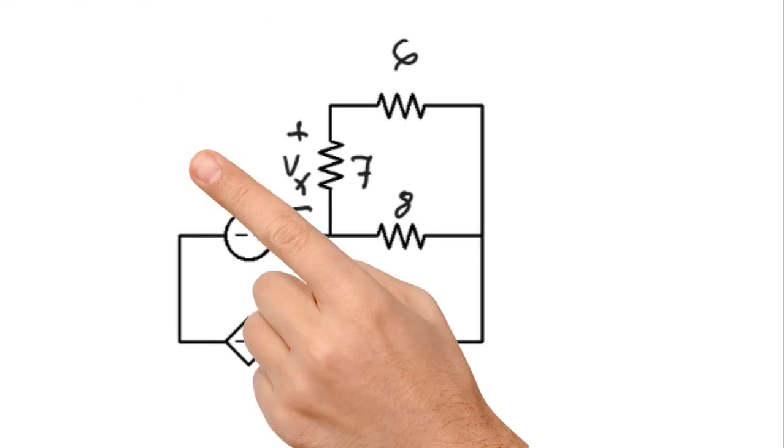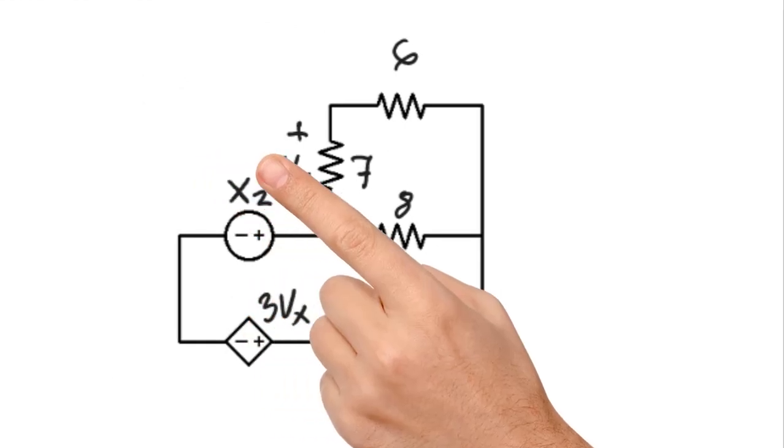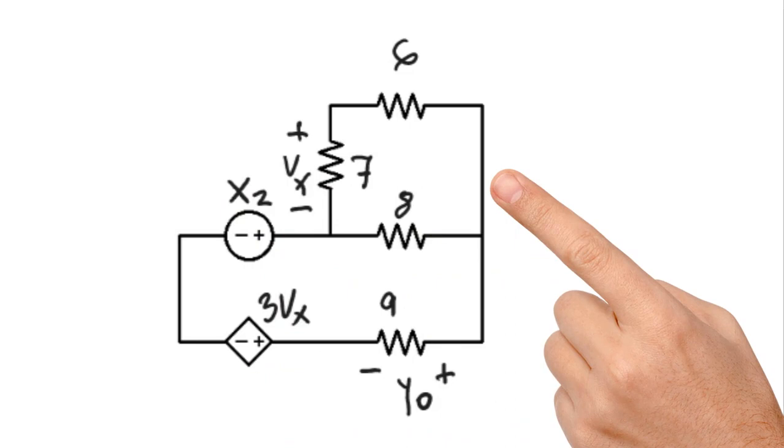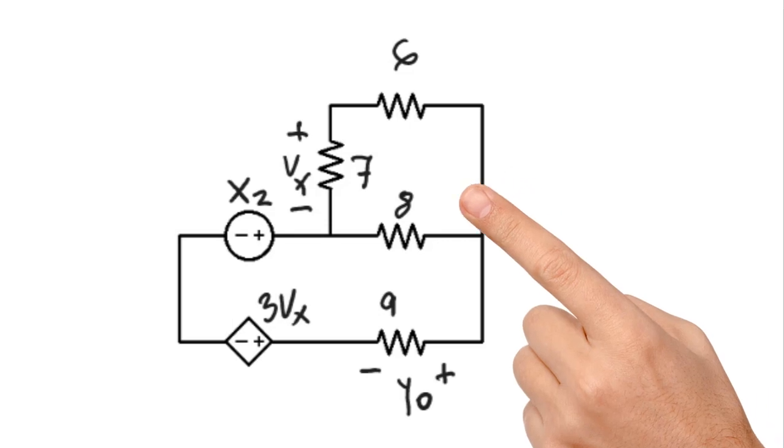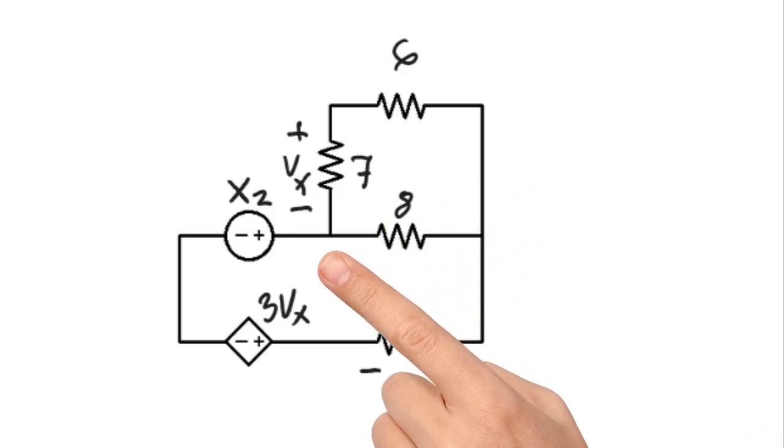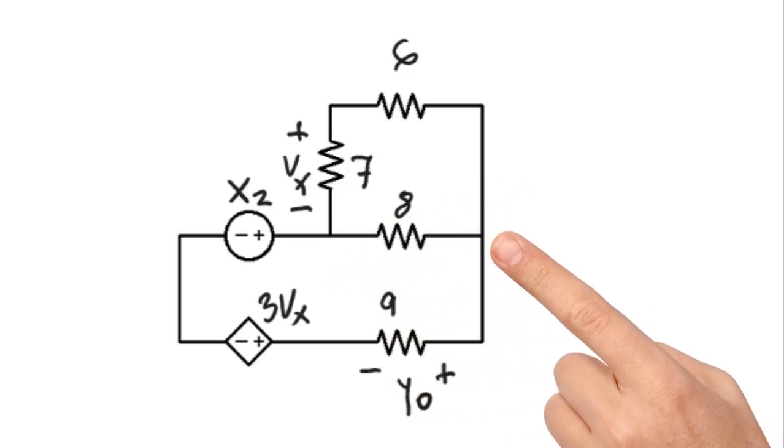The current source X1 disappears along with its branch. The voltage source X3 becomes a short circuit. That leaves us with a circuit that has only two nodes. I choose the one in the middle as my reference and the one on the far right as node 1.